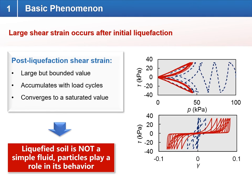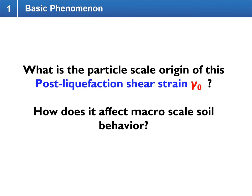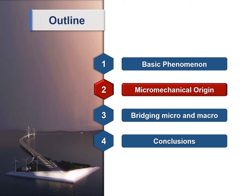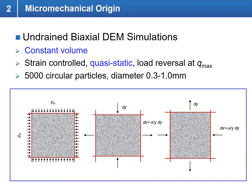To summarize, this post-liquefaction shear strain is large but bounded, accumulates with load cycles, and eventually converges to a saturated value. This shows us that liquefied soil is not a simple fluid, and particles play a role in the behavior of this liquefied material. So we need to ask ourselves two questions: first, what is the particle-scale origin of this post-liquefaction shear strain gamma_naught, and second, how does this particle-scale origin affect macroscale soil behavior to cause this large shear strain?